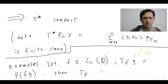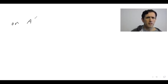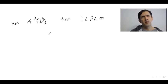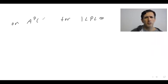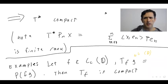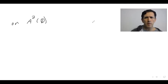The claim is that Tf is compact on the Bergman space Ap for one less than p less than infinity. Let's stick to p equals two. This is an orthogonal projection so there's no issue about being bounded. A really deep question, which I've done research on and Professor Zhu has done research on, is: for precisely which f is Tf compact?